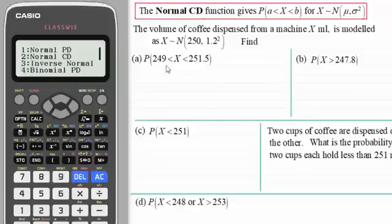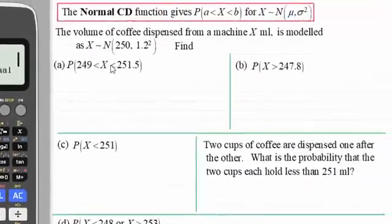And in the first example we're going to look at directly applying this function, the normal CD function, working out the probability that the random variable X is greater than 249 but less than 251.5. And I've got a graph here that sketches this out.